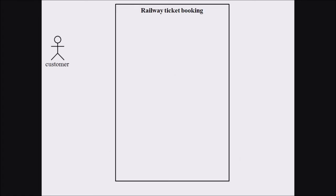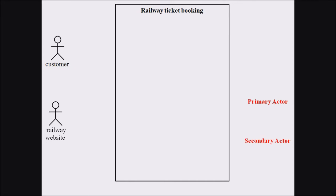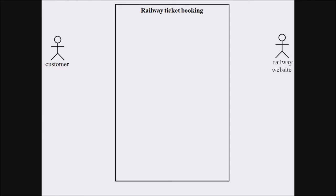In our railway ticket booking example, the railway ticket booking system is represented within a rectangle with its title. There is a customer represented with an actor symbol as the primary actor. The railway website is a secondary actor. Primary actors are represented on the left side of the figure and secondary actors on the right side.